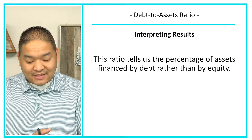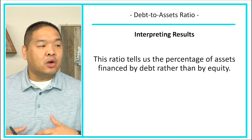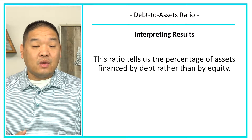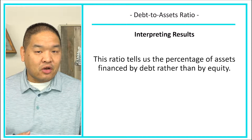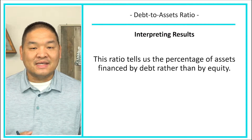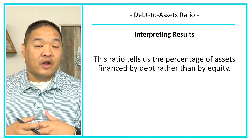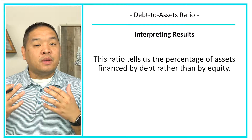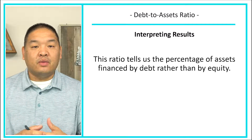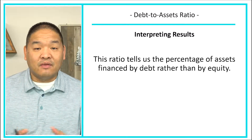This ratio tells us the percentage of assets financed by debt rather than by equity. When companies have assets financed by debt, if they don't pay those loans off, the loan holder may be able to repossess those assets — which isn't great if the company is having a hard time paying those debts. When assets are paid with equity, we own them outright, so even in a market downturn we keep them.